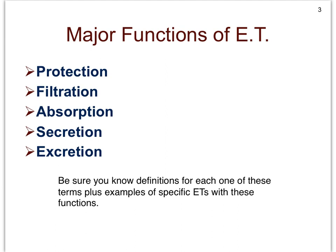Epithelial tissue might also be involved in filtration, and we see this for instance in the case of the kidneys. Filtration is a passive process, meaning it does not require ATP, and it depends on a pressure gradient — not a concentration gradient, but a pressure gradient.